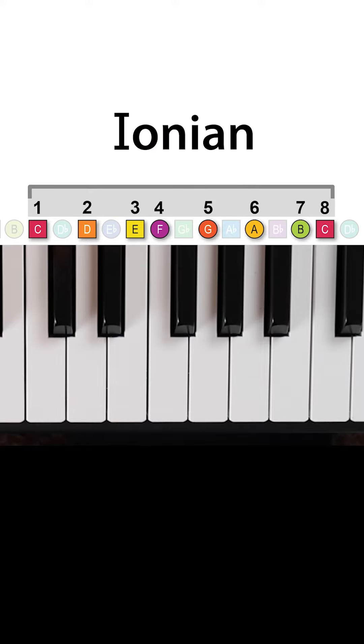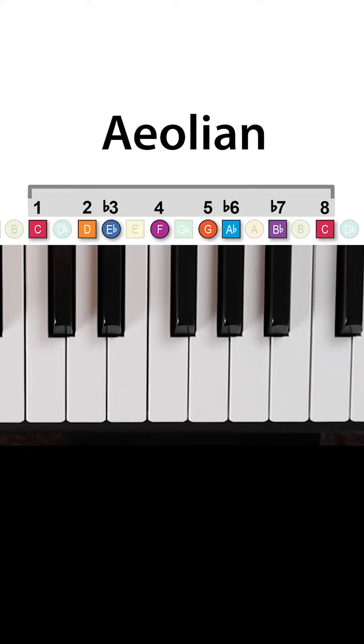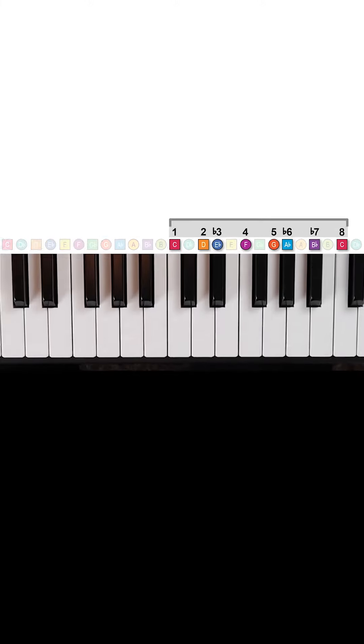For example, I'm going to play a melody that's mostly centered around C Ionian for a happy sound, but then midway through I'll dip into C Aeolian to give it a more melancholy feel for some emotional variety. So check this out.